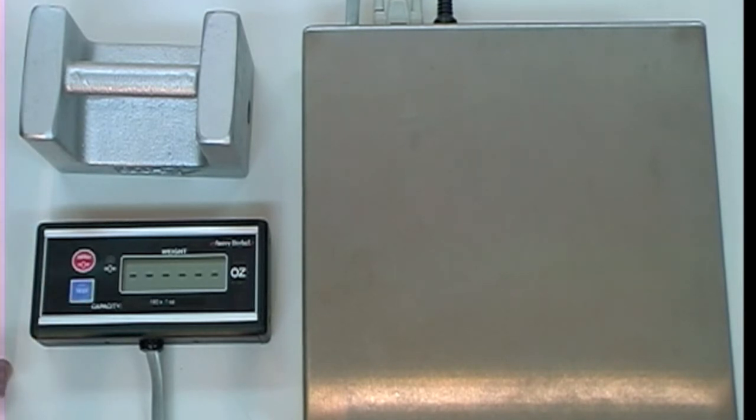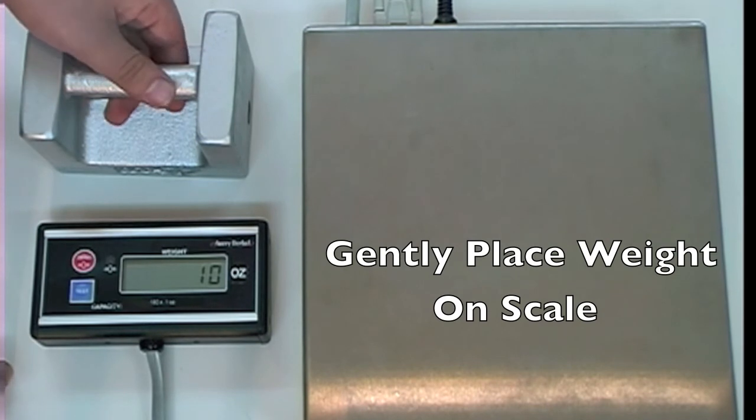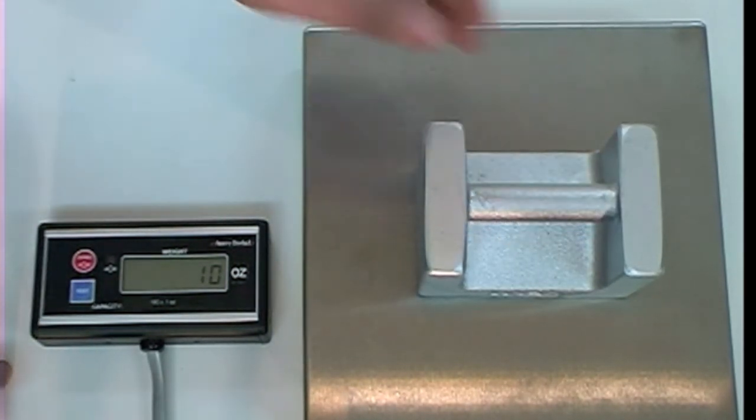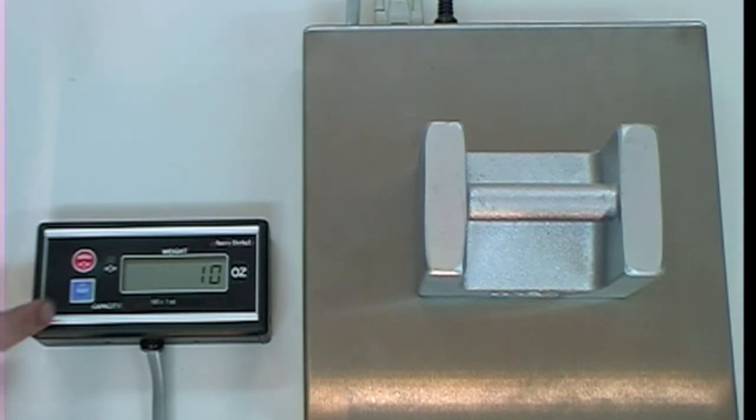The display should now read LOAD 10. It is now time to gently place the 10 pound calibration weight onto the scale. Once the weight is on, press the blue TEST button again and the display should now be ready to calibrate.